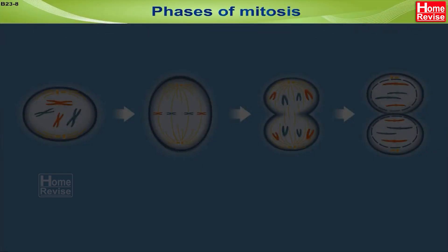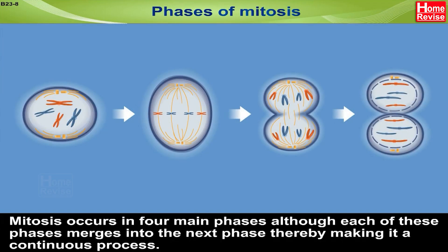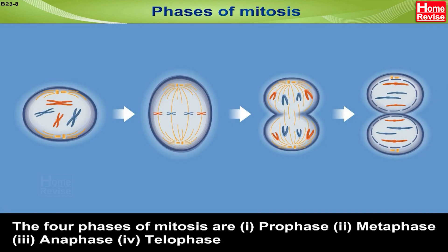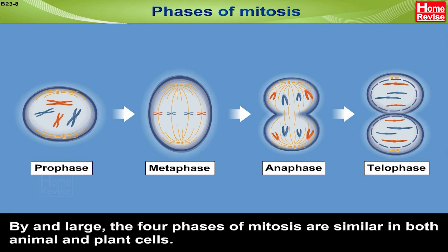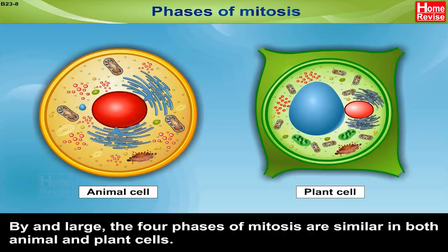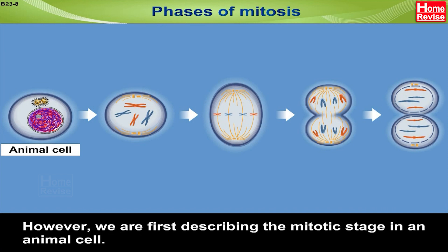Mitosis occurs in four main phases, although each of these phases merges into the next phase, thereby making it a continuous process. The four phases of mitosis are: 1. Prophase, 2. Metaphase, 3. Anaphase, 4. Telophase. By and large, the four phases of mitosis are similar in both animal and plant cells. However, we are first describing the mitotic stage in an animal cell.